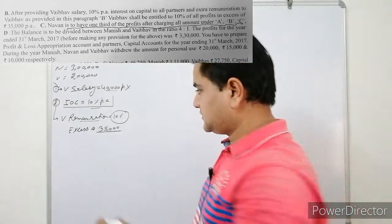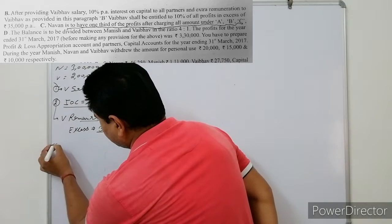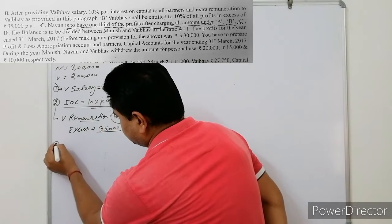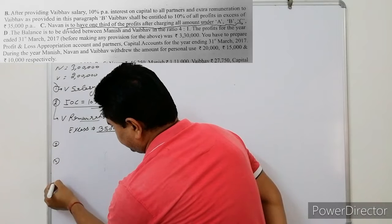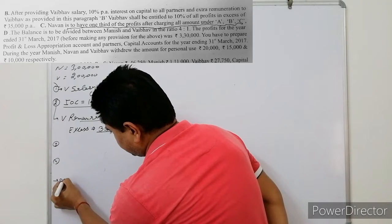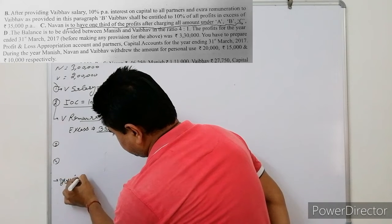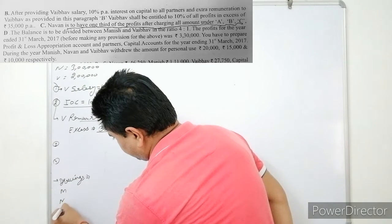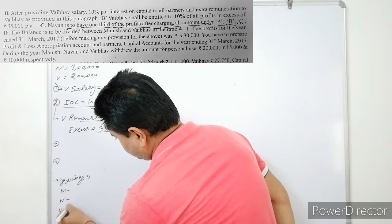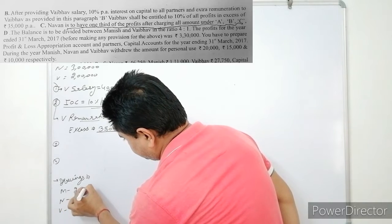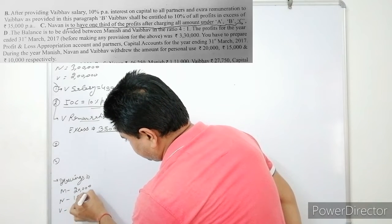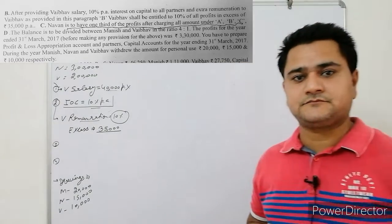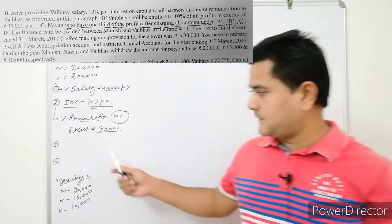You have to prepare the appropriation account and capital account. The drawings of the partners are given: Manish Rs.20,000, Navan Rs.15,000, and Weibo Rs.10,000.